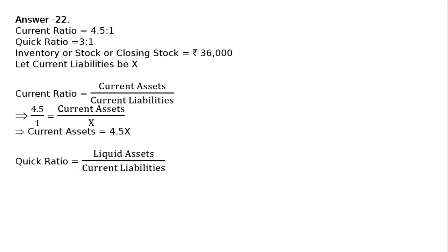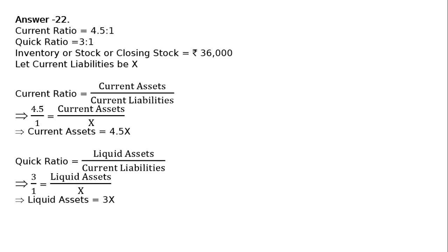Then, quick ratio — that is, liquid assets upon current liabilities — is equal to 3 upon 1, which implies that 3 upon 1 is equal to liquid assets upon X. We substitute X in place of current liabilities. By cross multiplying, liquid assets is equal to 3X.